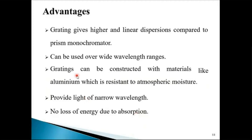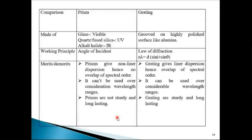Gratings give higher and linear dispersion compared to a prism monochromator. They can be used over a wide range of wavelengths. Gratings can be constructed with materials like aluminium, which is resistant to atmospheric moisture. They provide light of very narrow wavelength and, most importantly, there is no loss of energy due to absorption by the device itself.